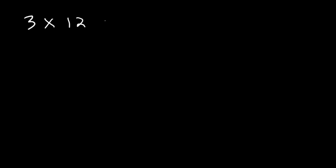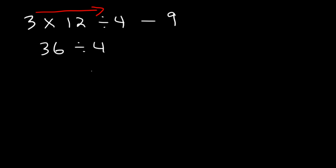Let's try one more: 3 times 12 divided by 4 minus 9. We need to multiply and divide before we subtract. Working left to right: since multiplication comes first, we can proceed in any order. 3 times 12 is 36, 36 divided by 4 is 9, and 9 minus 9 is 0. So the final answer is 0.